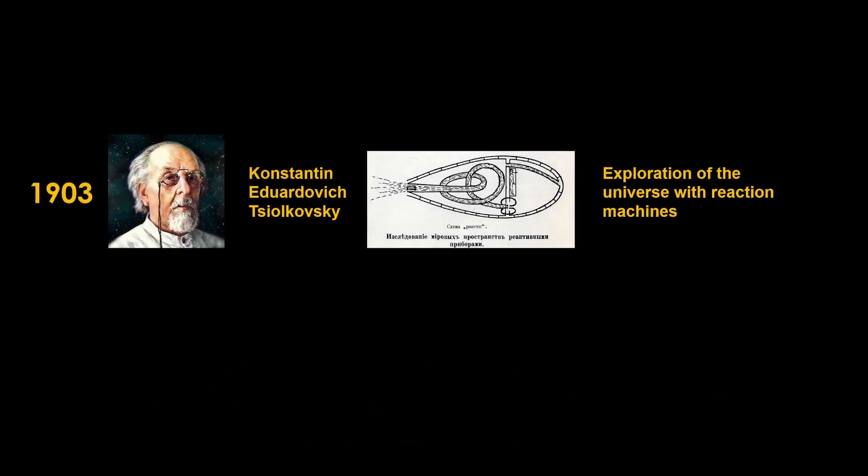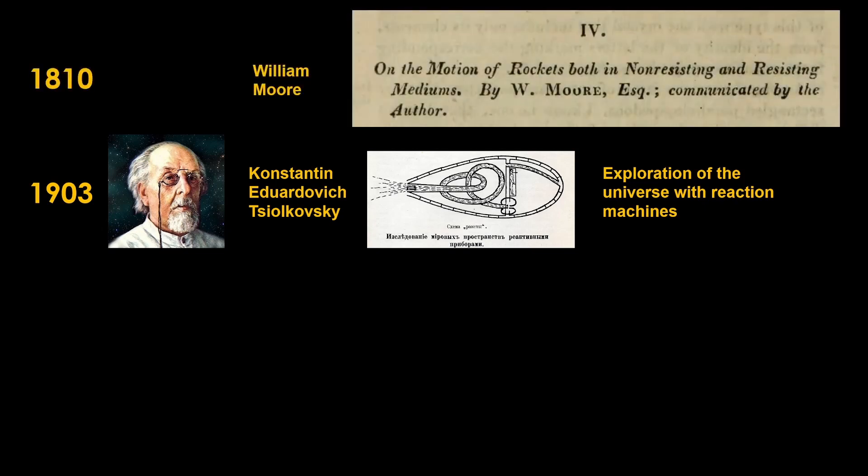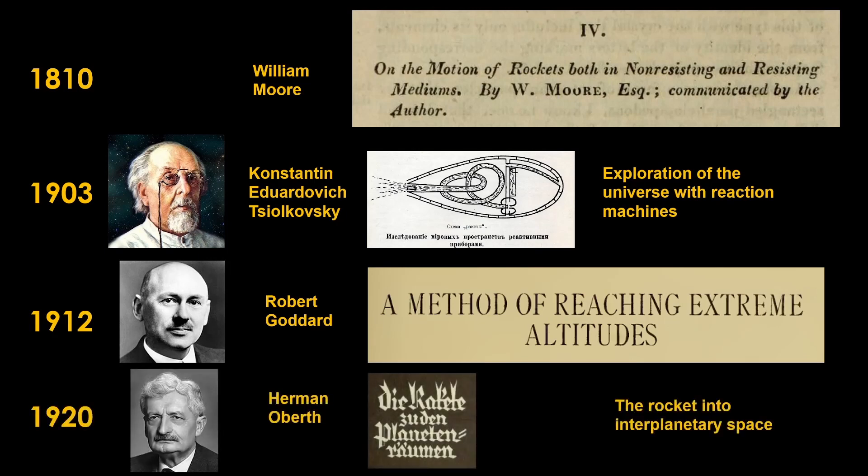The rocket equation is generally credited to Konstantin Eduardovich Tsiolkovsky, from his 1903 work Exploration of the Universe with Reaction Engines. The derivation was, as I said, fairly straightforward, and had in fact been derived by British mathematician William Moore in 1810 in his work on the motion of rockets both in non-resisting and resisting mediums. Tsiolkovsky gets the credit because he did a lot of other interesting work on rockets, including coming up with the concept of staging. The equation would be re-derived by the American rocket researcher Robert Goddard in 1912, and finally re-re-derived by German engineer Hermann Oberth in 1920.